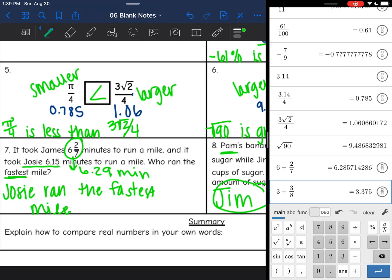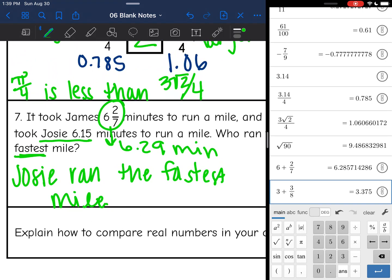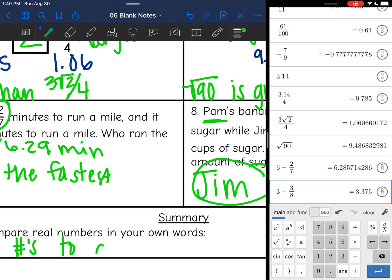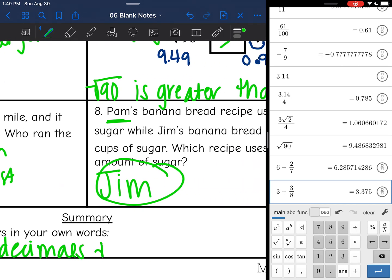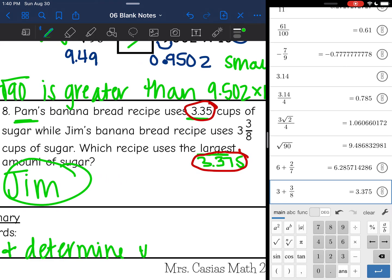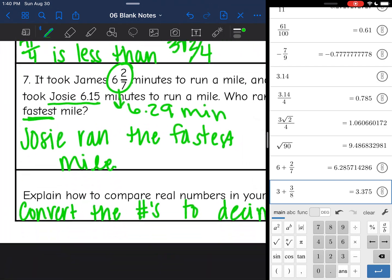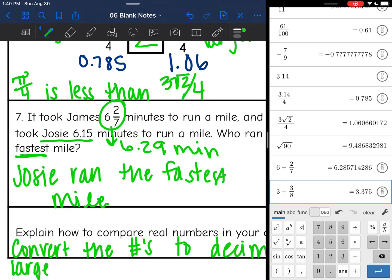Explain how to compare real numbers in your own words. So basically, we convert the numbers to decimals and determine which number is larger, and then that helps you figure out which inequality sign to use.